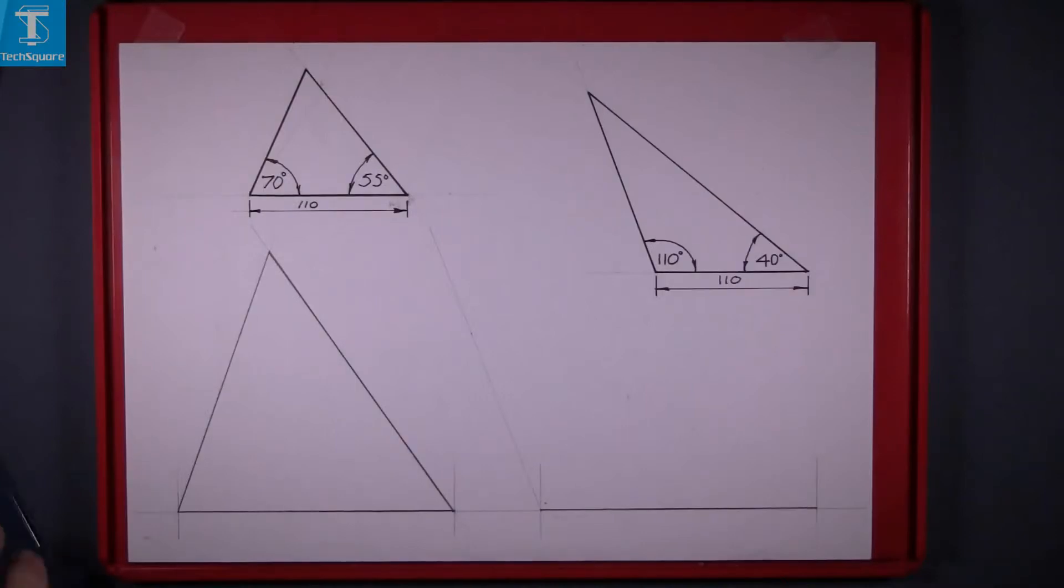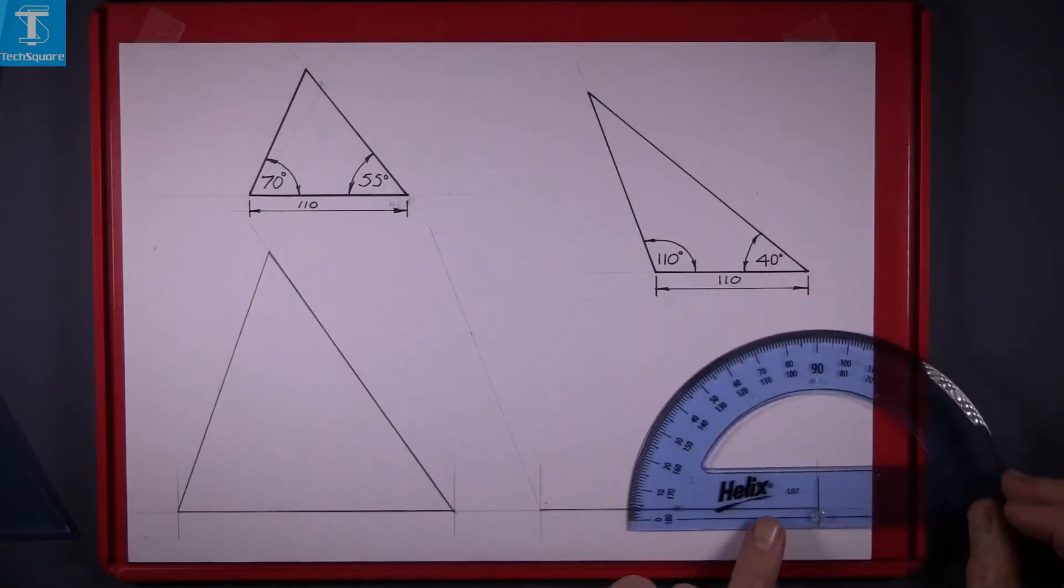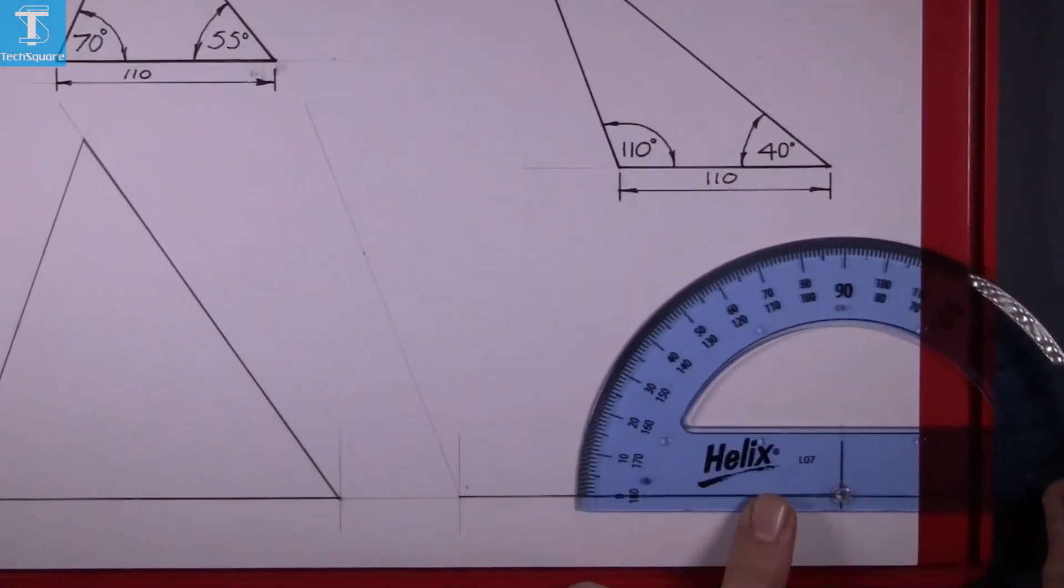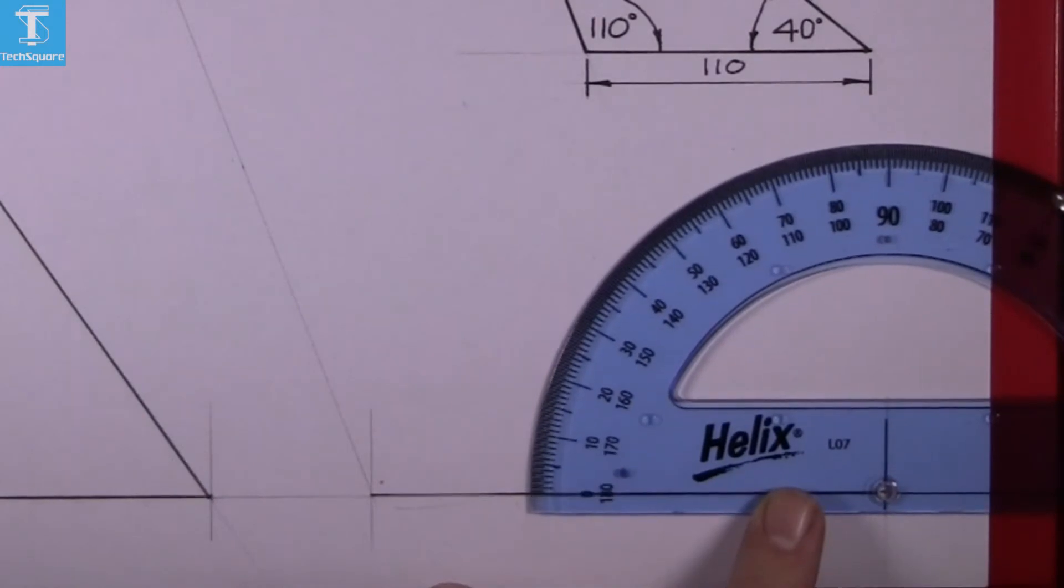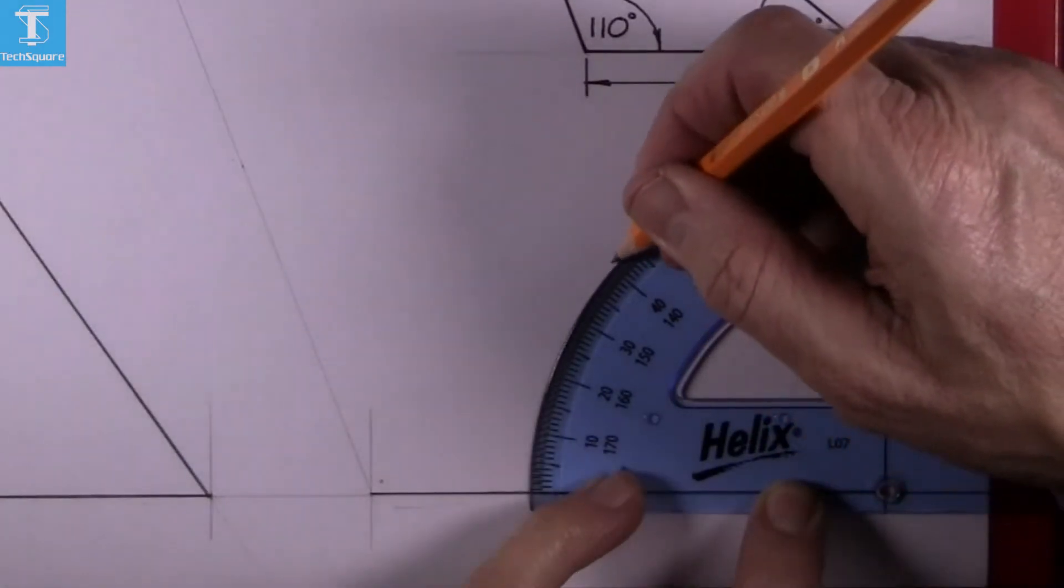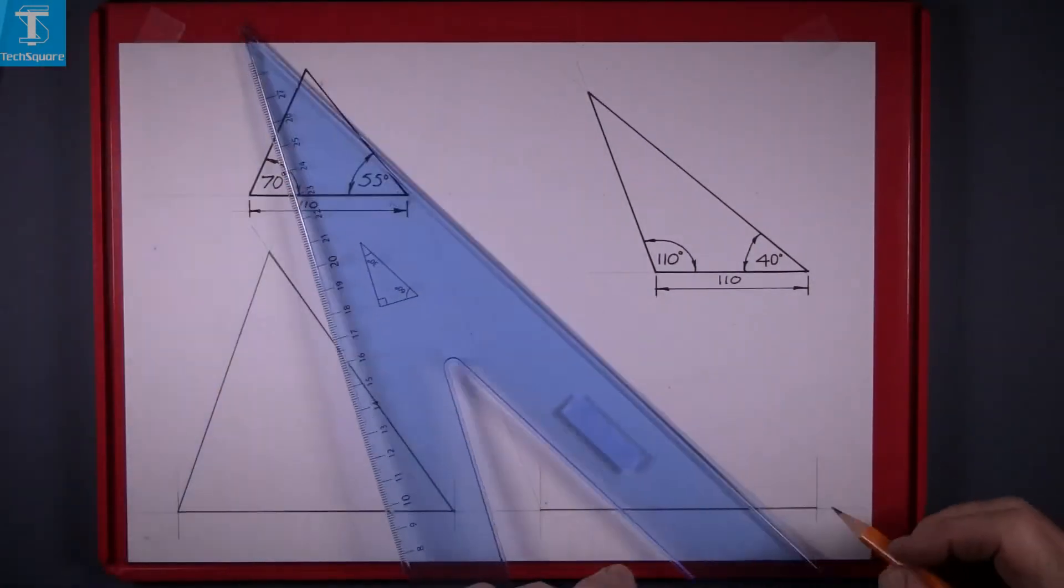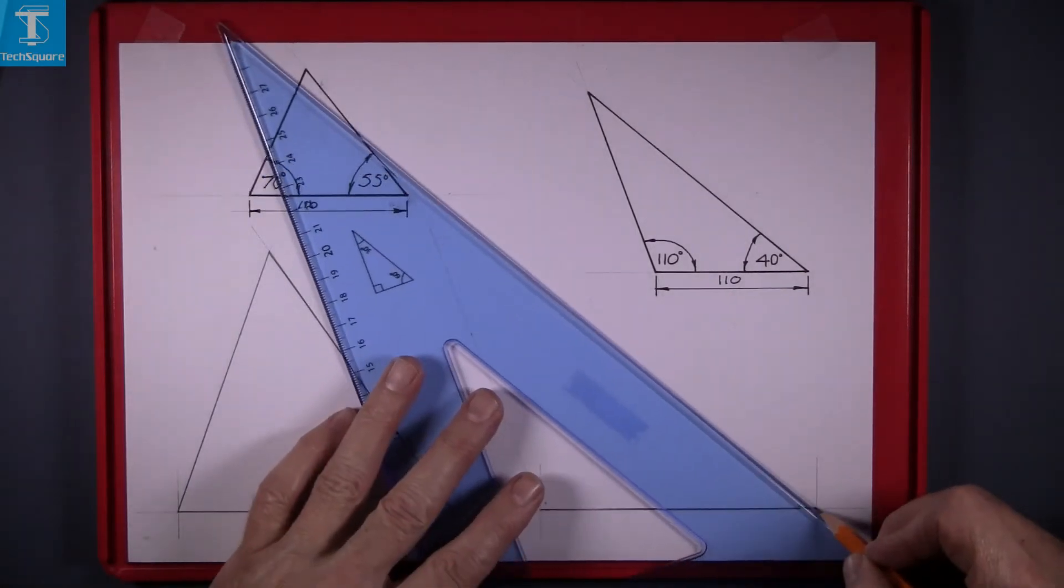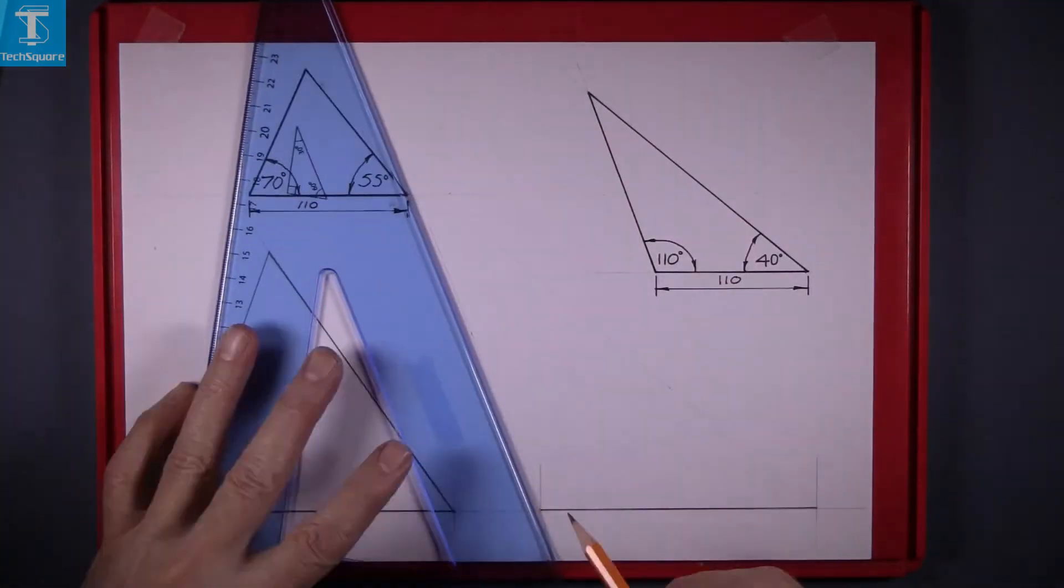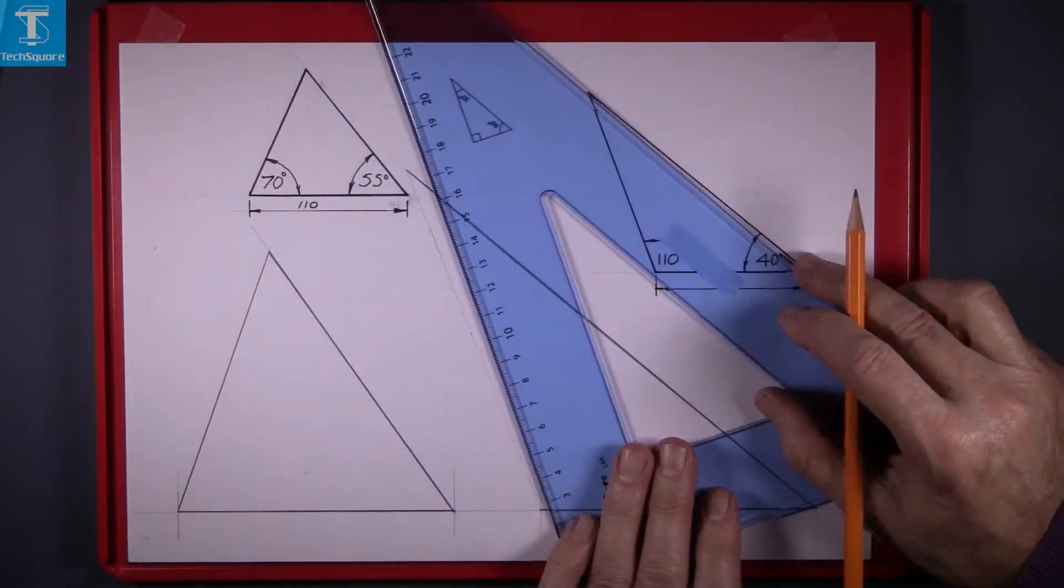That line has to be drawn in lightly because we don't know what length it goes. The next angle is 40 degrees, so again line up the protractor with the base and the center of the protractor at the end of the line and count up here 40 degrees. Mark your point there and then draw your line through that point and then line in your triangle and that's your triangle complete.